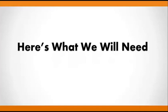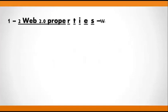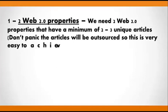Here is exactly what we'll need to set this up. One: we're going to need two Web 2.0 properties — like Blogger and WordPress.com. We need a minimum of two to three unique articles on each. These articles are usually outsourced and can be done for $10 to $15 at most for the whole lot. You can write them yourself if finances are small, or use an article spinner — but be very careful to make sure it's fairly unique.